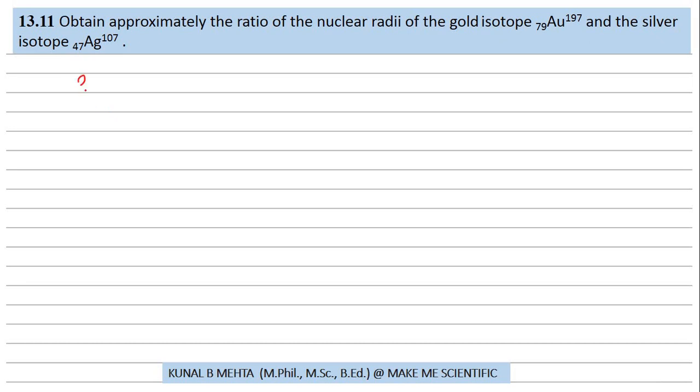So, we are going to use this formula R equals R0 A raised to 1 by 3, where A is the mass number and R0 is a constant which is 1.2, that is 1.2 into 10 raised to minus 15 meter.